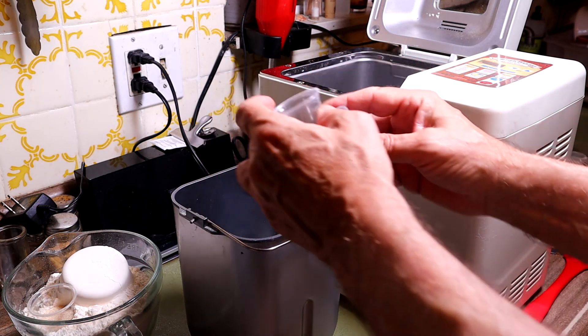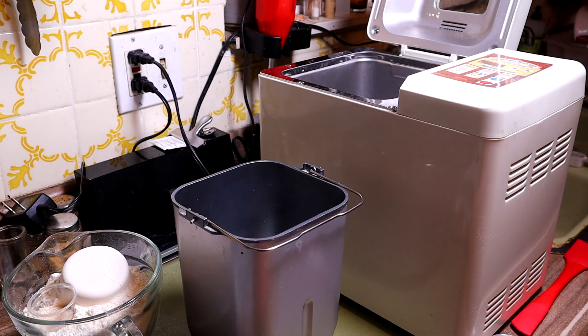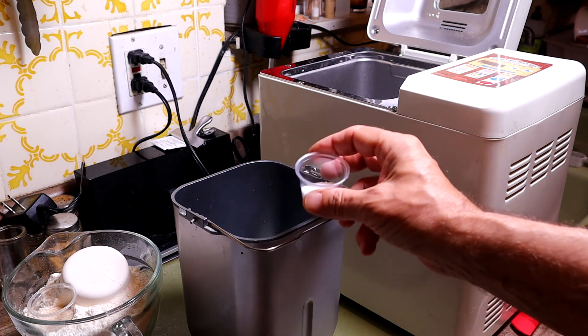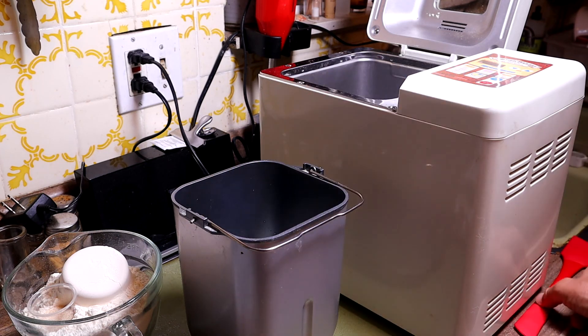I have found that regular milk, if you try to use that in a bread machine, for some reason the bread doesn't come out well. Two teaspoons of salt. That's our wet ingredients.